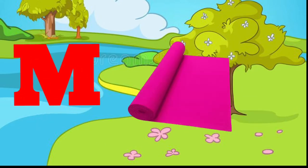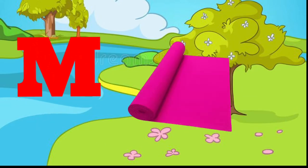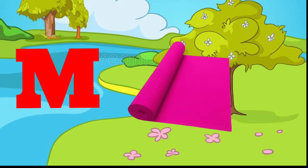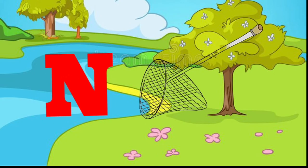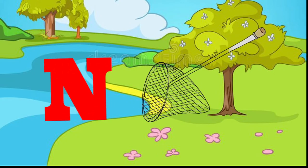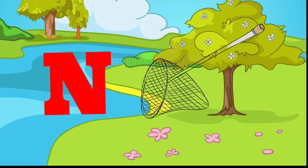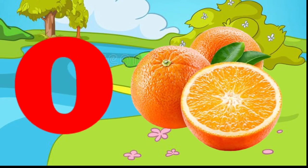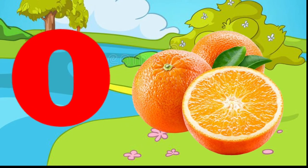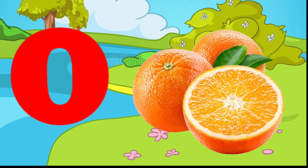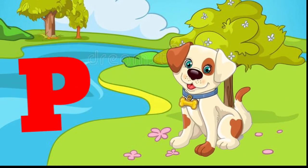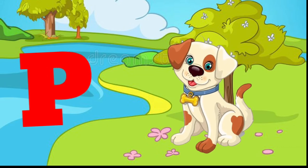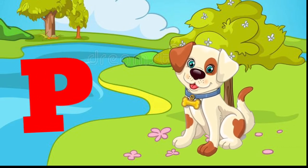M is for mat, m-m-mat. N is for net, n-n-net. O is for orange, o-o-orange. P is for pet, p-p-pet.